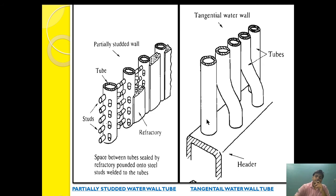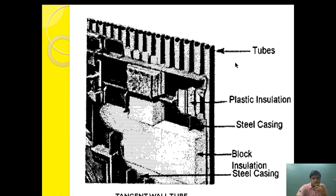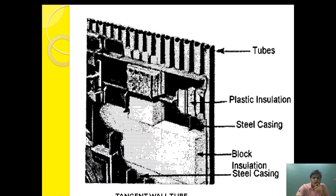As you can see in this diagram, these are the stub water wall tubes embedded within the refractory material. Different layers of insulation are provided: first the water wall tube and refractory, then block insulation, then plastic insulation, and finally a ceiling layer — all to prevent direct heat from reaching the boiler outer casing. The tangential wall tubes are placed in slight misalignment to reduce stress concentration in one particular plane.